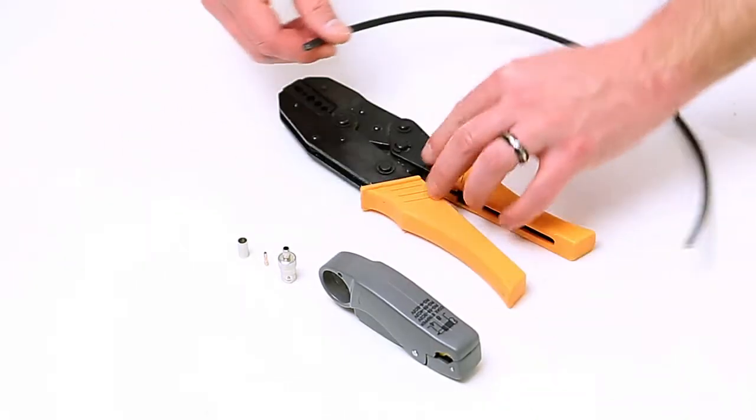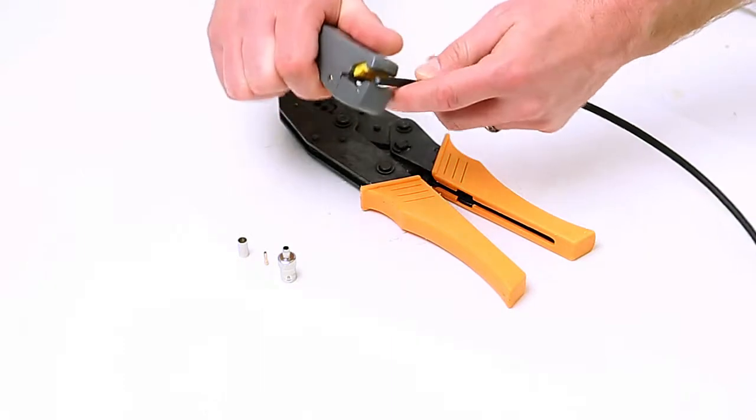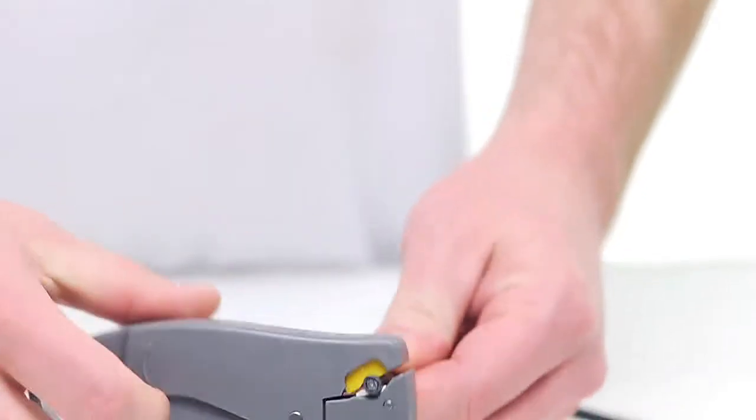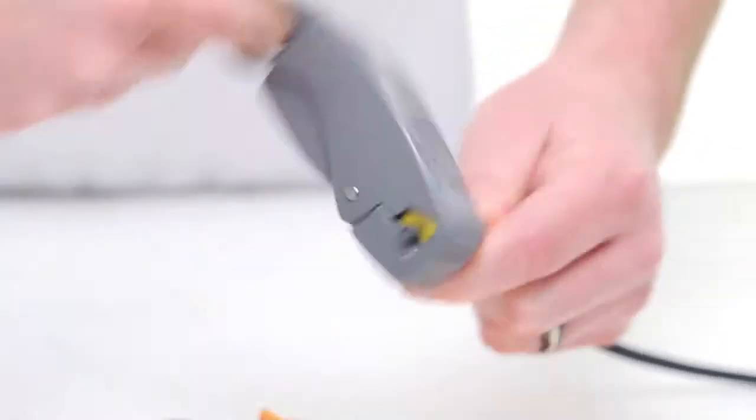To begin, take your coax stripper and remove the outer jacket and dielectric of the cable. Rotate the tool a few times around the outside of the cable and peel the jacket off.